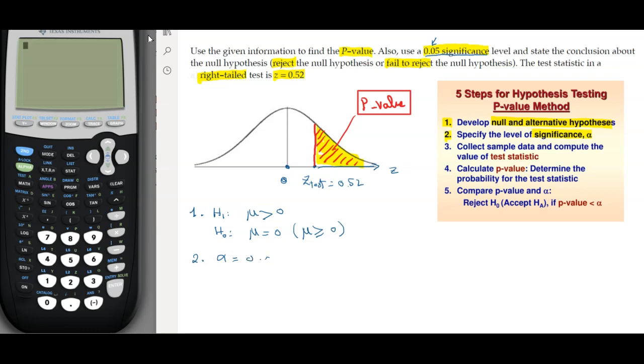Now we are ready for the third step. Usually the third step is to calculate or to compute the statistic test value. In this case we are given the z value, so no calculation is required for this example. So the third one, we have the z test and this value is going to be 0.52.